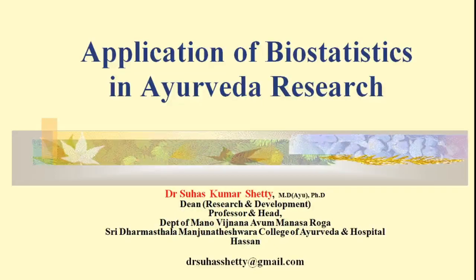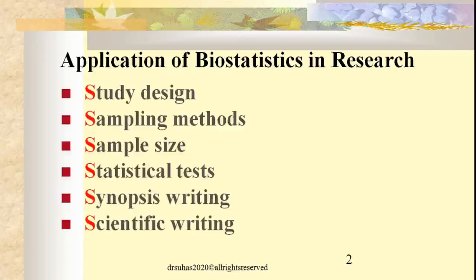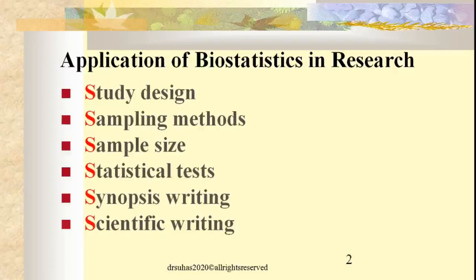Welcome to the continuation of the session on application of biostatistics in Ayurveda research. In the previous part we briefly covered some important areas where we can apply basic knowledge of biostatistics in various types of Ayurveda research. We can summarize the important areas as: application of biostatistics in study design, selecting sampling methods, calculation of sample size, selecting appropriate statistical tests, and in scientific writing or publication.